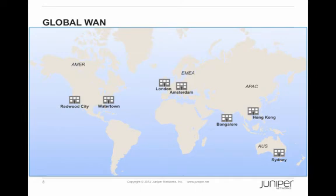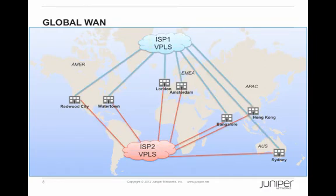We have several communications hubs that we call Juniper Pops or JPops. We have two in each region — Americas, EMEA, and APAC — plus one more in Sydney, Australia. Each of these Pops is interconnected via two separate global VPLS clouds from two different providers. Even though we picked VPLS as the service to interconnect our different sites, what really matters to us is that we have Layer 2 connectivity between the sites. We're not very particular about what kind of technology is actually used — it just has to be Layer 2.